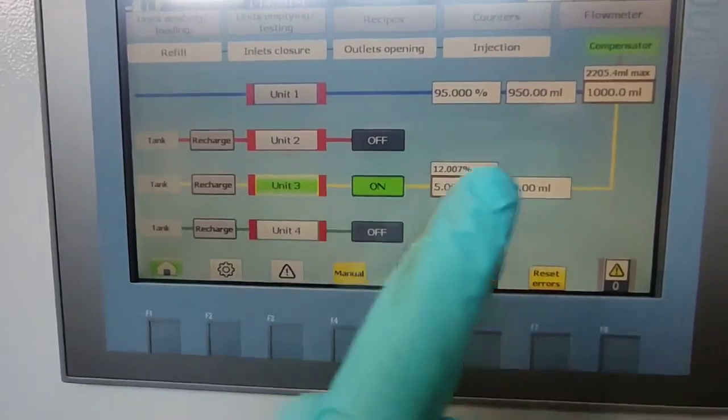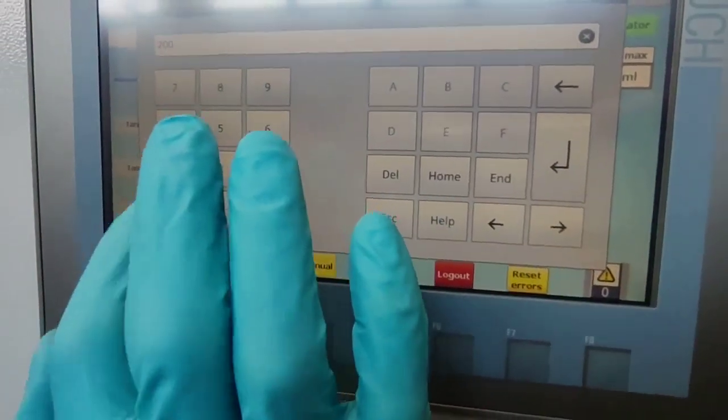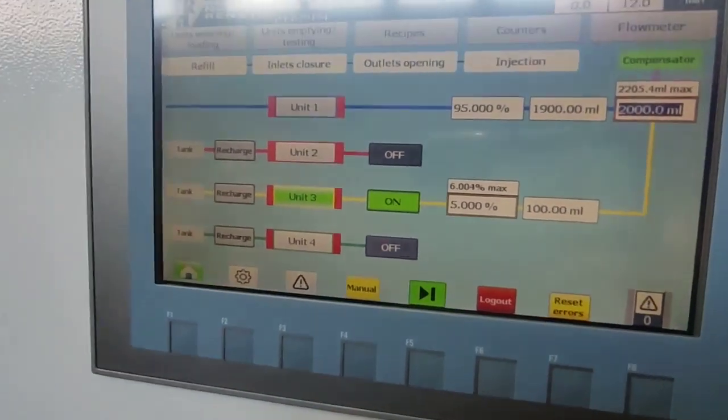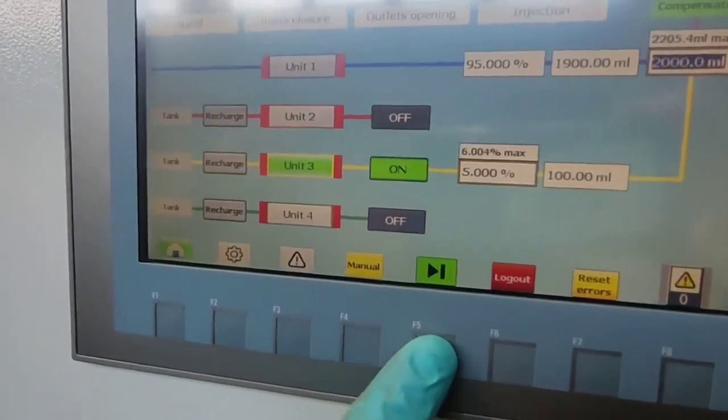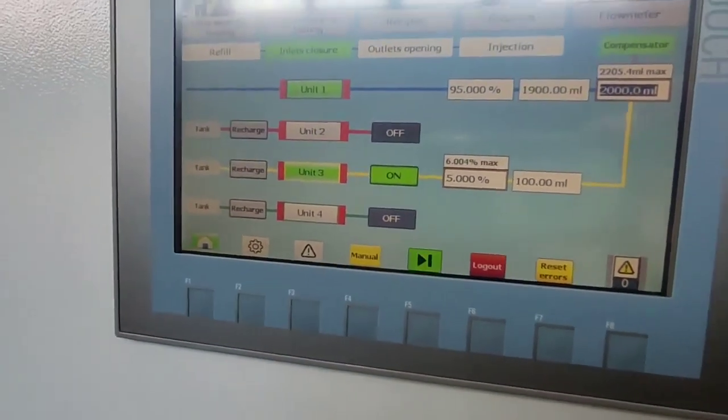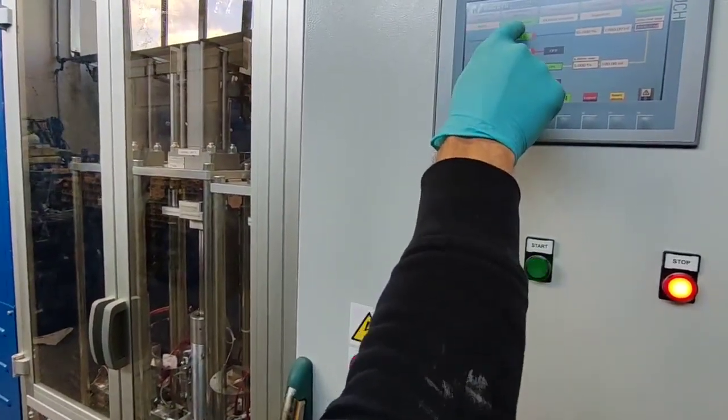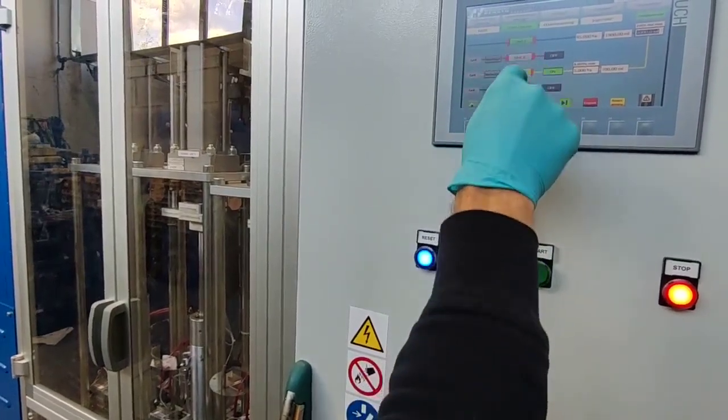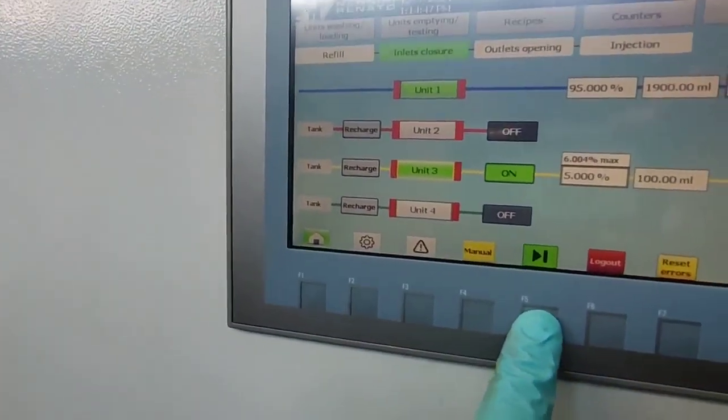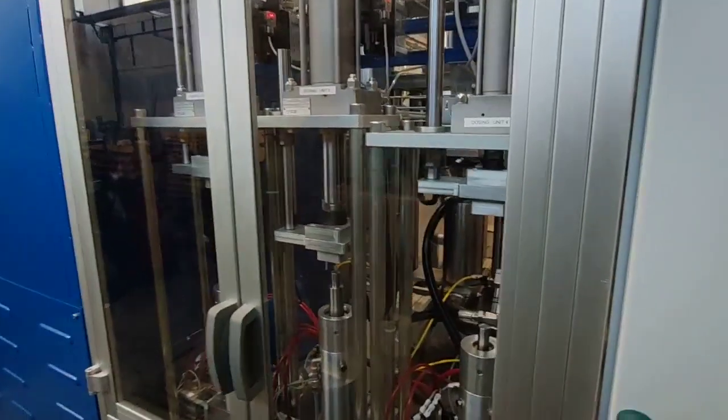In this moment we are going to do one liter, but we can also set two liters if you want. We are doing five percent of dosing unit three additive. I push this button in order to charge the dosing units. Now the dosing units are ready. You can see that both are green, so we can push again this button to start the next part of the procedure and the dosing units are dosing out the product.